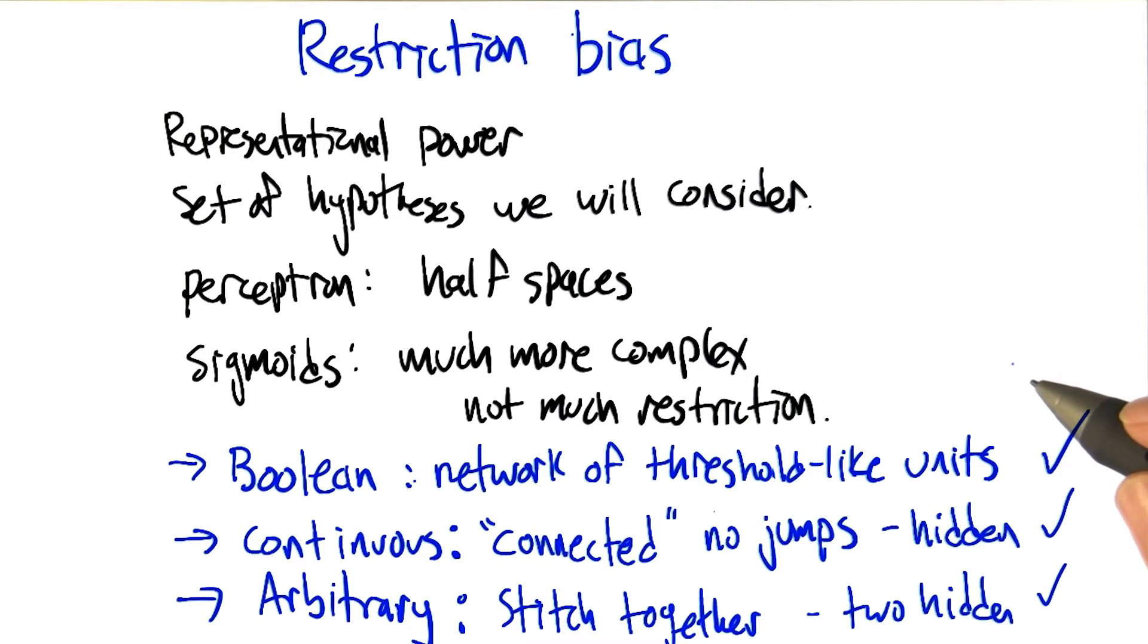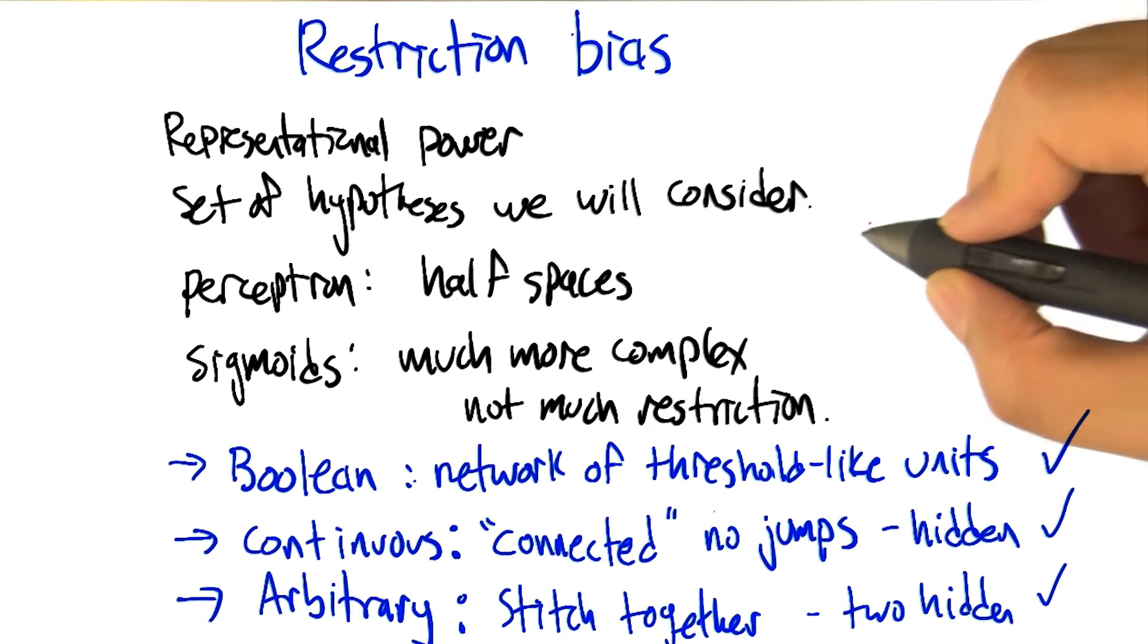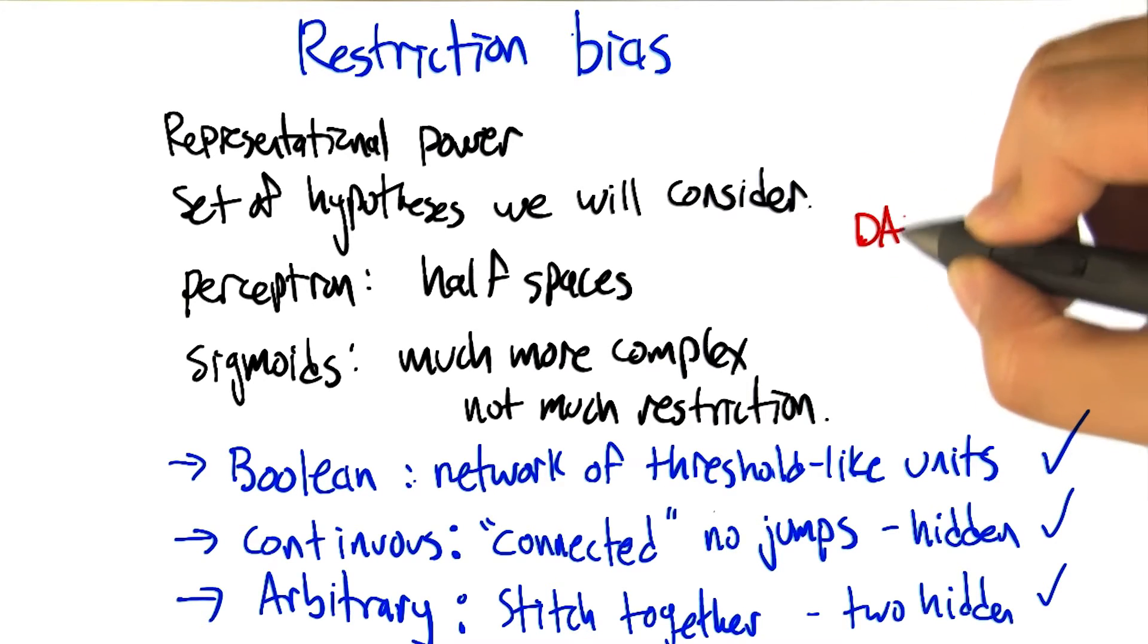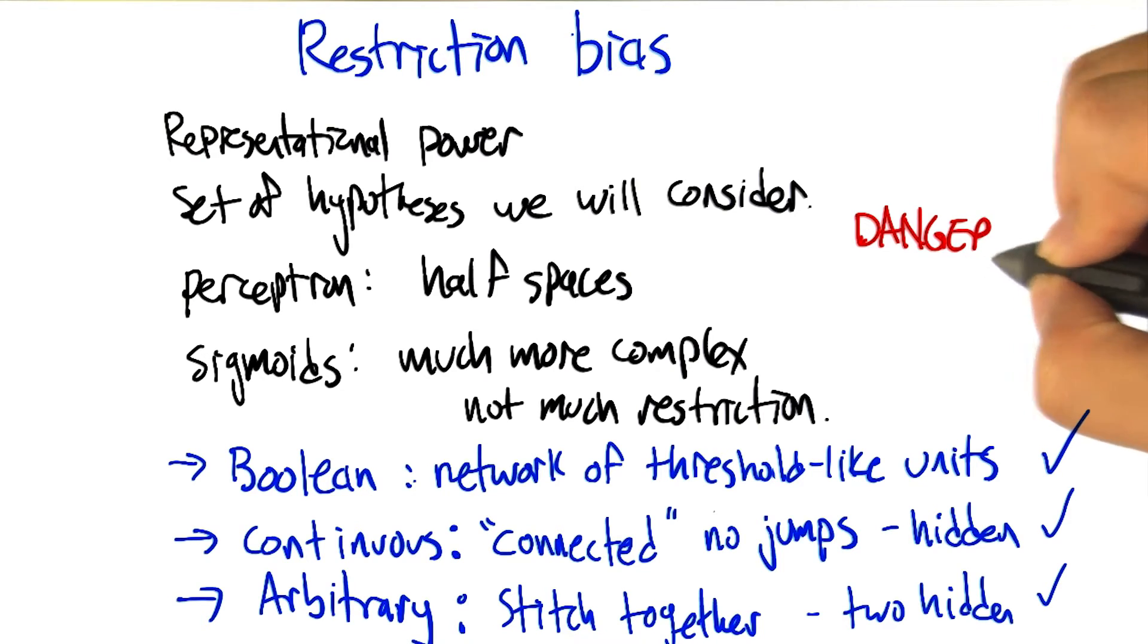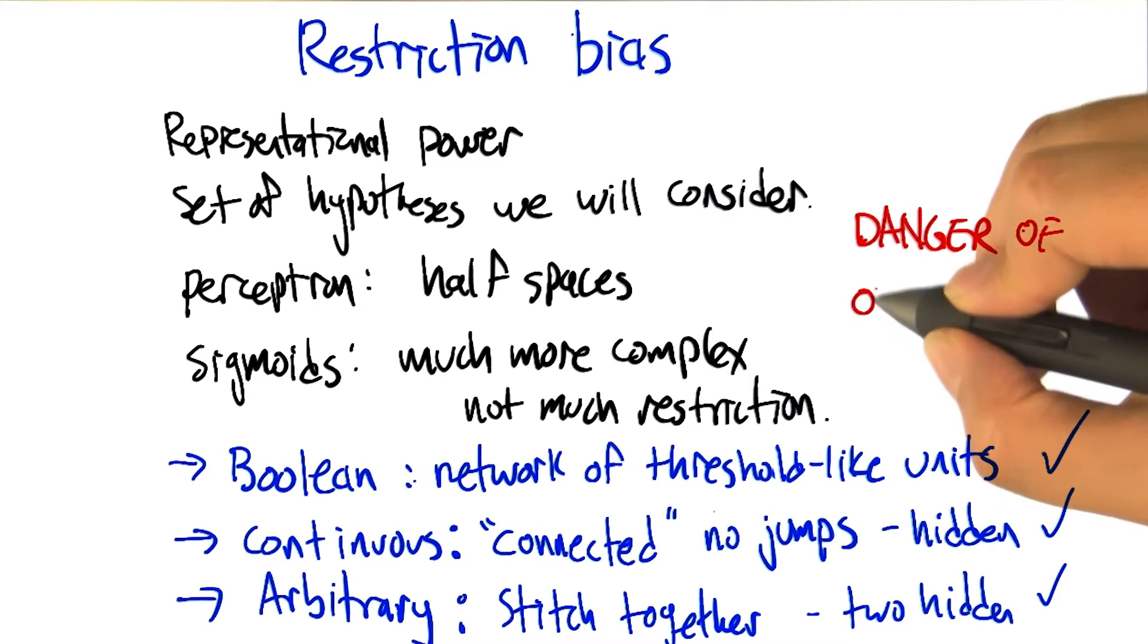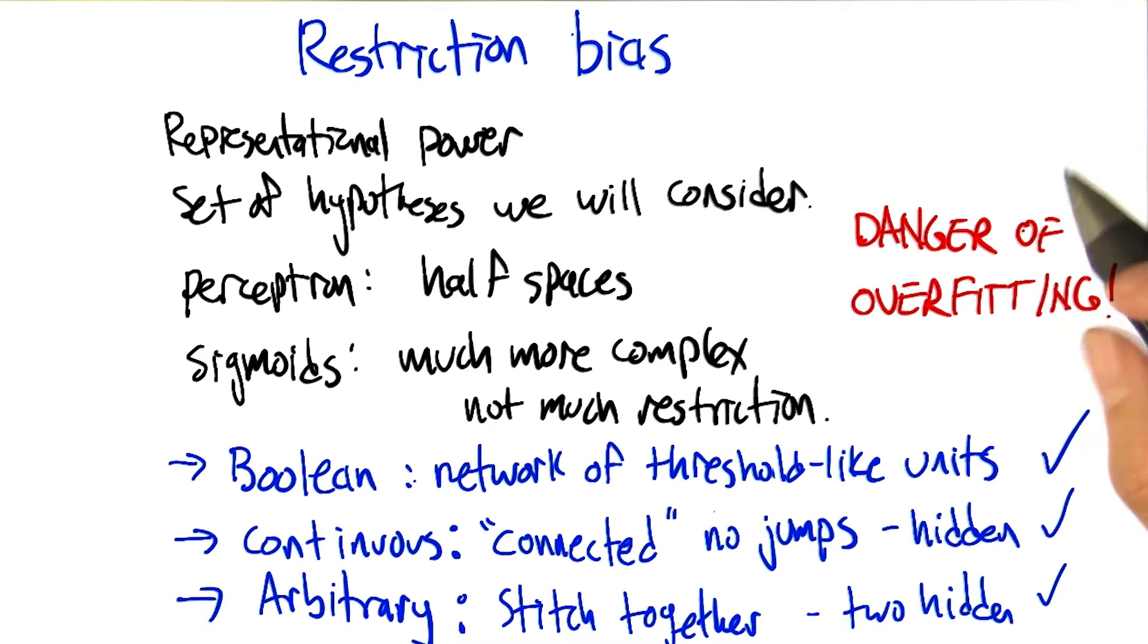So that worries me a little bit, Michael, because it means that we're almost certainly going to overfit, right? If we can have arbitrarily complicated neural networks, then we can represent anything we want to, including all of the noise that's represented in our training set. So how are we going to avoid doing that? Excellent question.